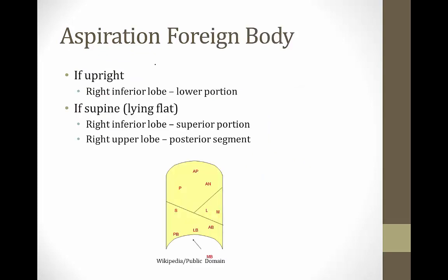On the Step 1 exam, they often test lung anatomy by asking where an aspirated foreign body will end up. There are two things to know: first, aspiration typically goes to the right lung; second, a foreign body goes to the most gravity-dependent or lowest portion. So if a child aspirates a peanut in the upright position, it goes to the right inferior lobe lower portion.